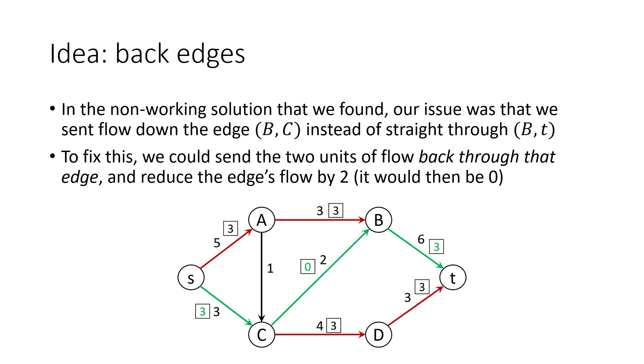Here's the idea. Since we sent those 2 units of flow through the edge, we can also choose to not send them through the edge. If we simply sent the flow backwards along this green path and reduced the forwards flow from B to C by 2, we'd have the same exact optimal solution that we came up with earlier.